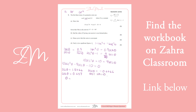Then you do inverse cos of 0.647 and we get 49.684 degrees. We want it in that interval, so to one decimal place that's 49.7 degrees.